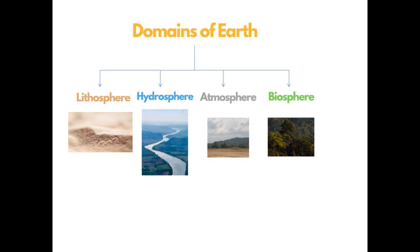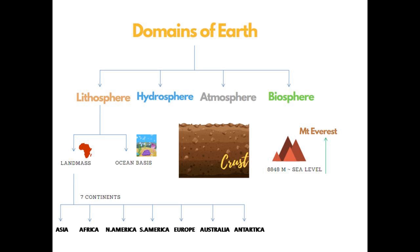We have four domains on Earth: lithosphere, hydrosphere, atmosphere, and biosphere. The surface of Earth, otherwise said as the crust portion of Earth, is called the lithosphere. Earth's lithosphere is divided into two types: one is landmass and the other one is ocean basins.